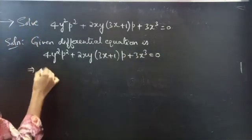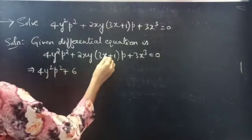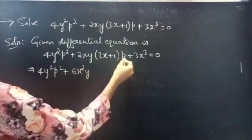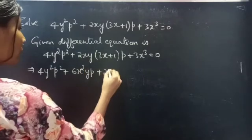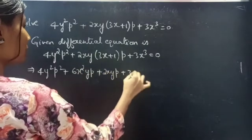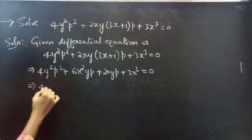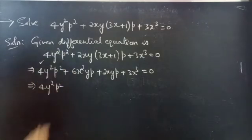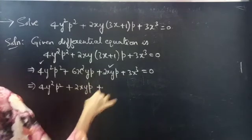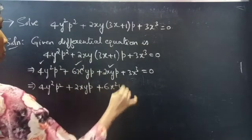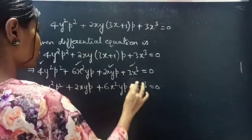We can rewrite it as 4y squared p squared plus 6x squared y·p plus 2xy·p plus 3x cubed equals 0.